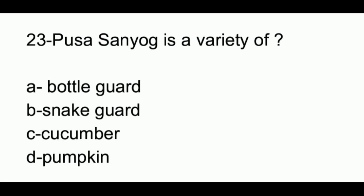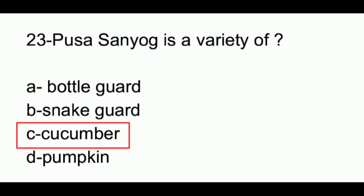Question number 23. Pusa Sanyog is a variety of: option A, bottle gourd; option B, snake gourd; option C, cucumber; option D, pumpkin. The answer to this question is option C, which is cucumber.